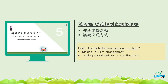第五课：从这里到车站很远吗？在这一课，我们学习安排旅游活动时会用到的句子和词汇，包括谈论交通方式。In this lesson, we will learn sentences and vocabulary that we will use to make travel arrangements, including talking about modes of transportation.